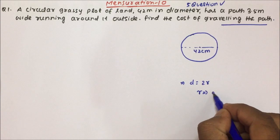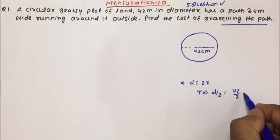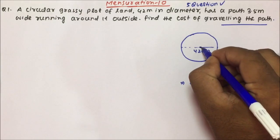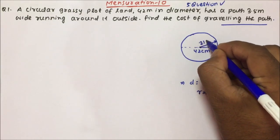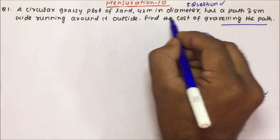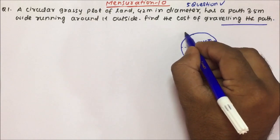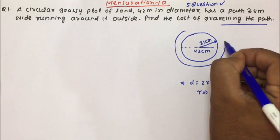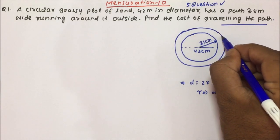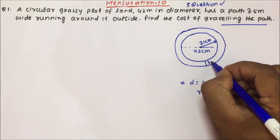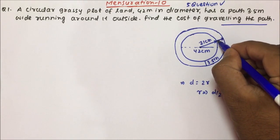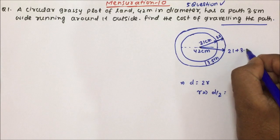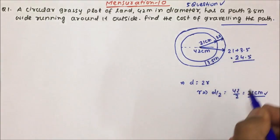Since diameter equals two times the radius, radius equals diameter divided by 2, so 42 divided by 2 equals 21 meters. The radius is 21 meters. The path is 3.5 meters wide, so the total outer radius becomes 21 plus 3.5, which equals 24.5 meters.